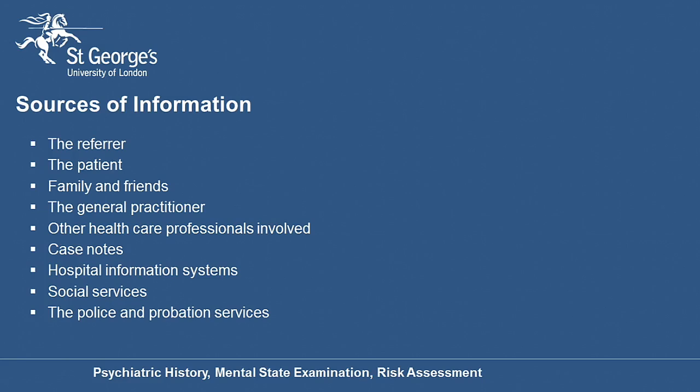The patient may be known to social services and this will be of particular interest where children are involved. And possibly the patient might be known to the police or probation services. When contacting these other sources of information we need to think about the person giving consent for us to do this.